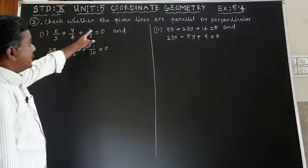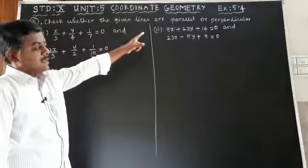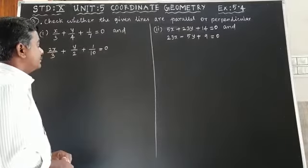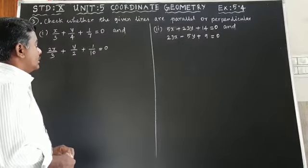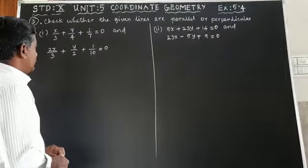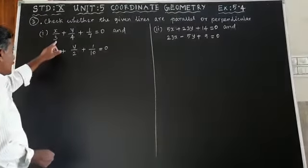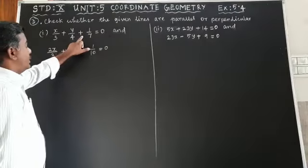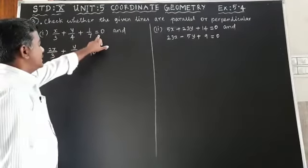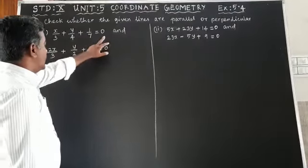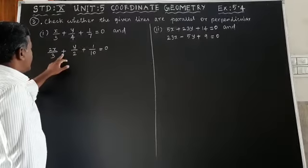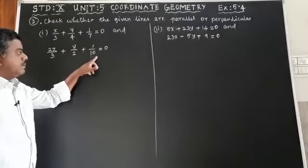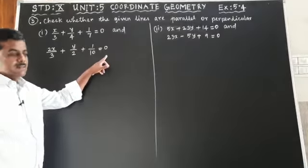Check whether the given lines are parallel or perpendicular. Given straight line: x/3 + y/4 + 1/7 = 0 and 2x/3 + y/2 + 1/10 = 0.